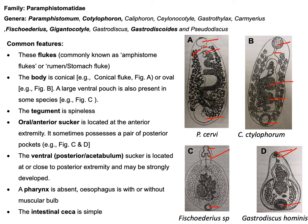The body is conical for Paramphystomum cervi and oval shaped for Cotylophoron cotylophoron. Sometimes there is a pouch called the ventral pouch, as seen in Fiscoidarius species. The tegument is spineless for all genera. The oral or anterior sucker is located anteriorly, and the posterior ventral sucker or acetabulum is located terminally and is used for attachment. There is no pharynx; only an esophagus with or without a muscular valve is present. The intestinal caeca are simple — there is no branching.